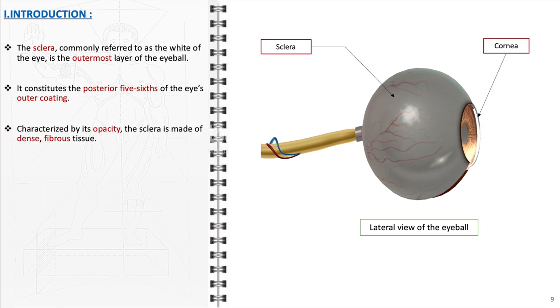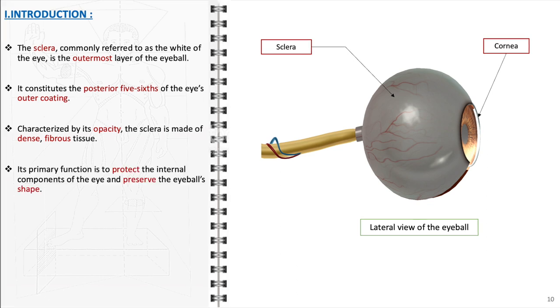Characterized by its opacity, the sclera consists of dense fibrous tissue, primarily composed of collagen and elastic fibers. This structure is crucial for protecting the delicate internal components of the eye from external harm and maintaining the eyeball's spherical shape.